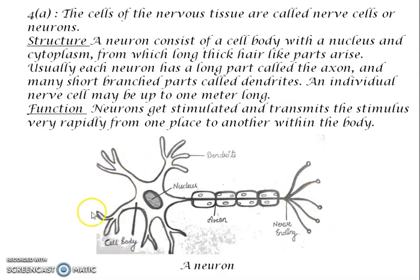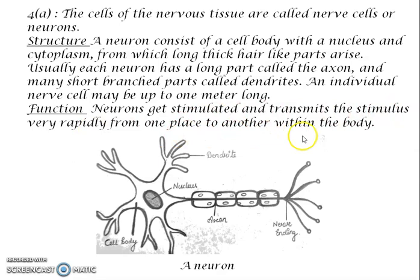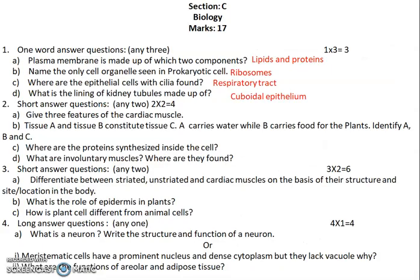A neuron consists of a cell body with a nucleus and cytoplasm. From the cytoplasm, hair-like parts called dendrites extend out. The cell also has a long part called the axon. An individual nerve cell may be up to one meter long. The function of a neuron is to get stimulated and transmit the stimulus very rapidly from one place to another within the body. Support your answer with a diagram to get full four marks.